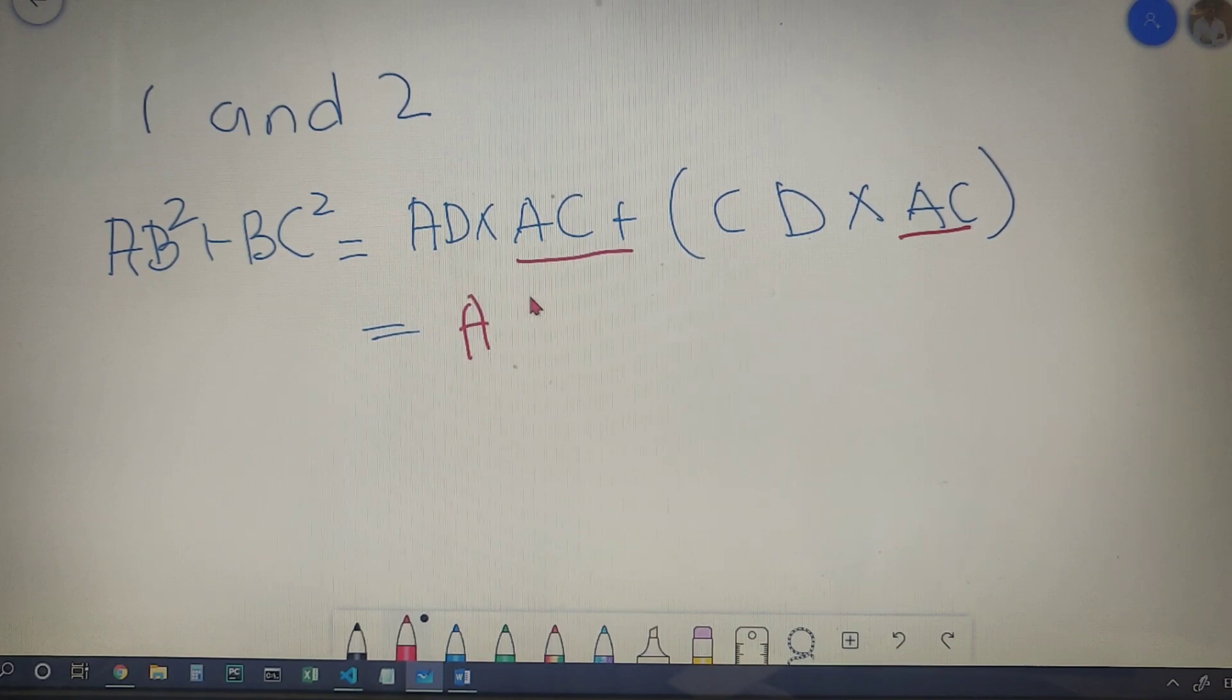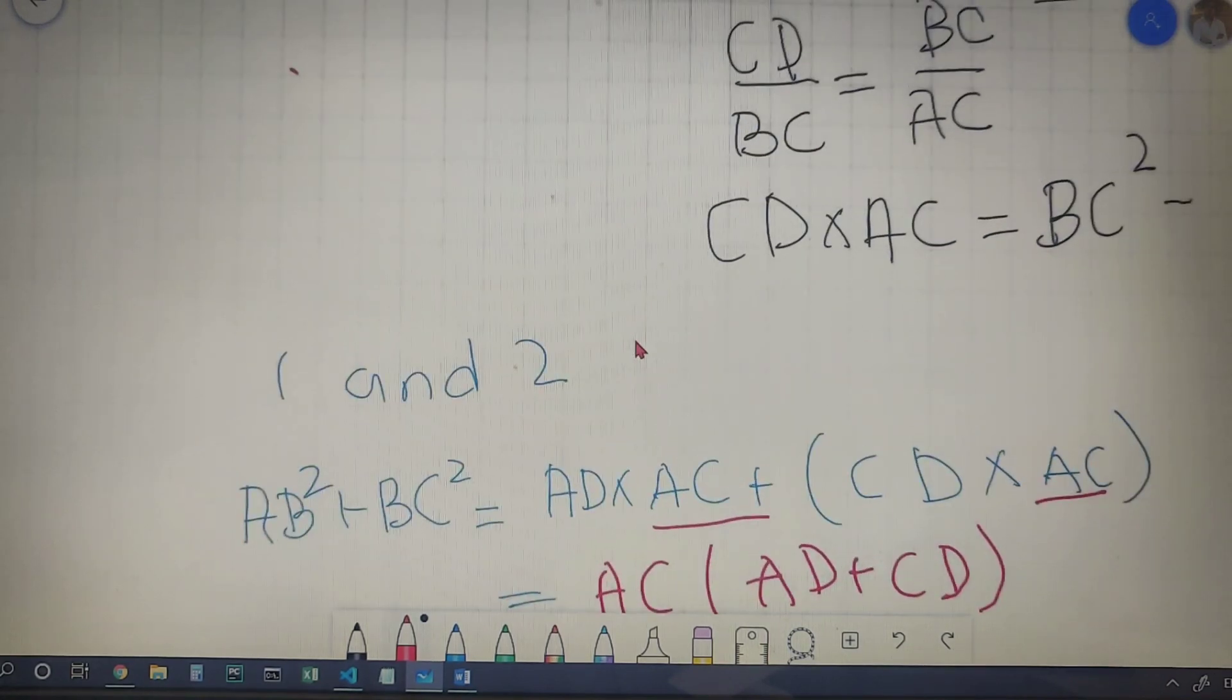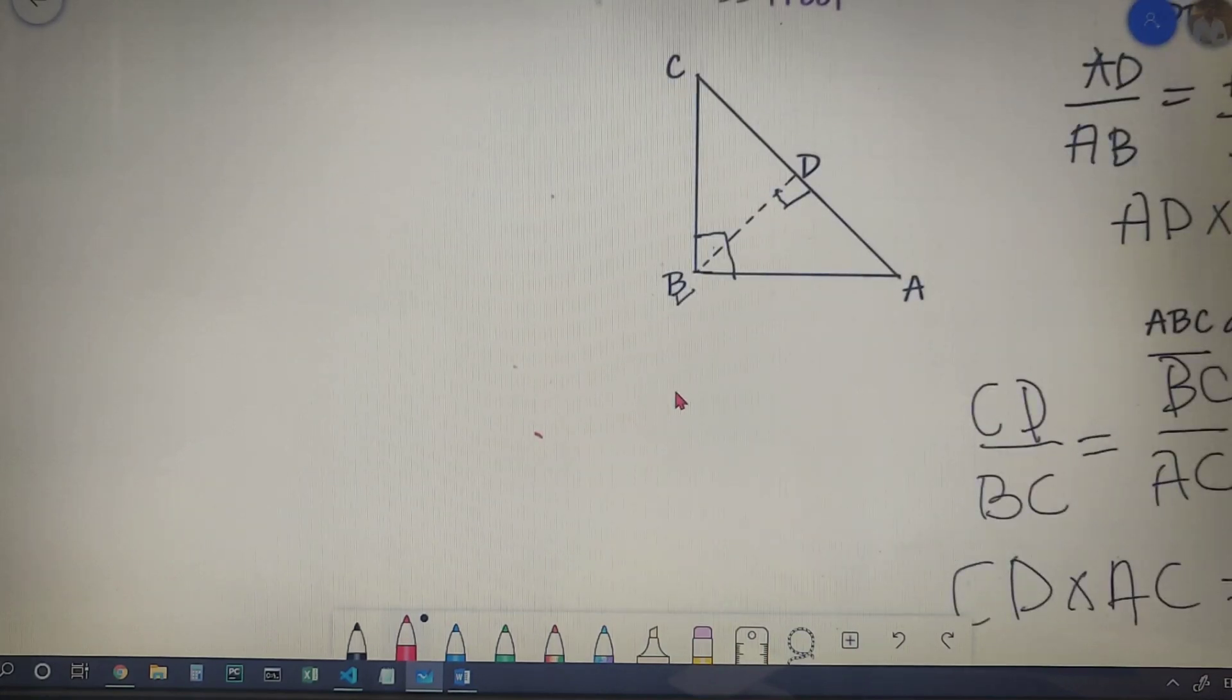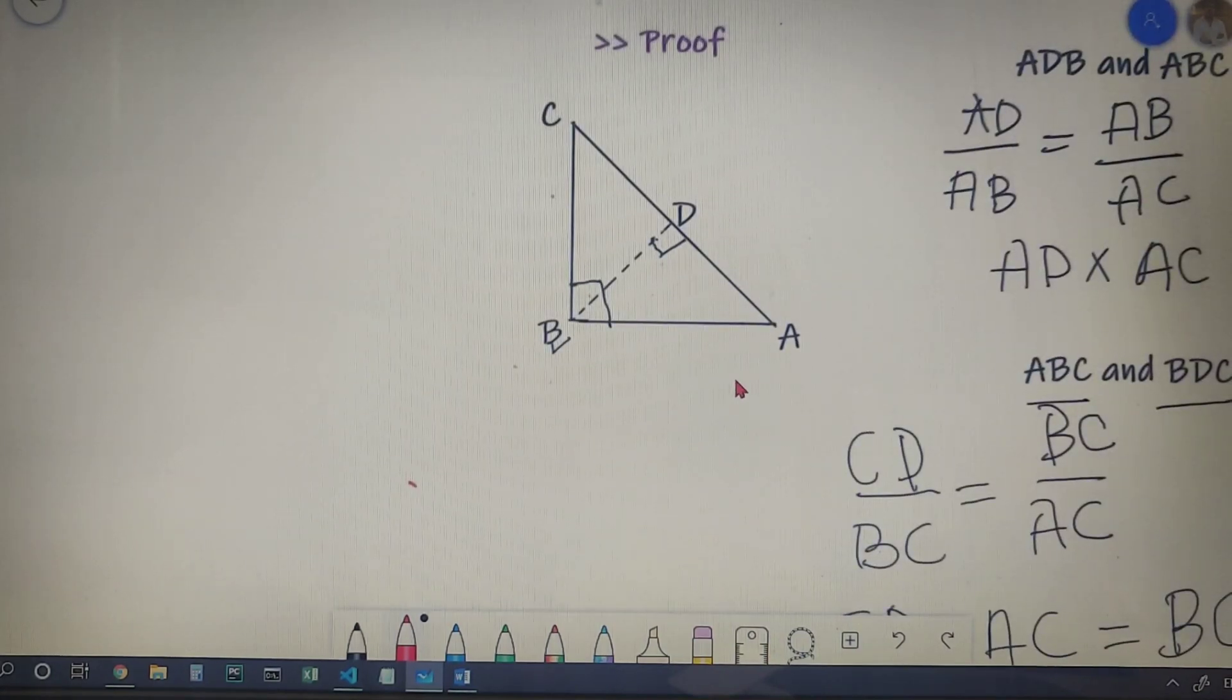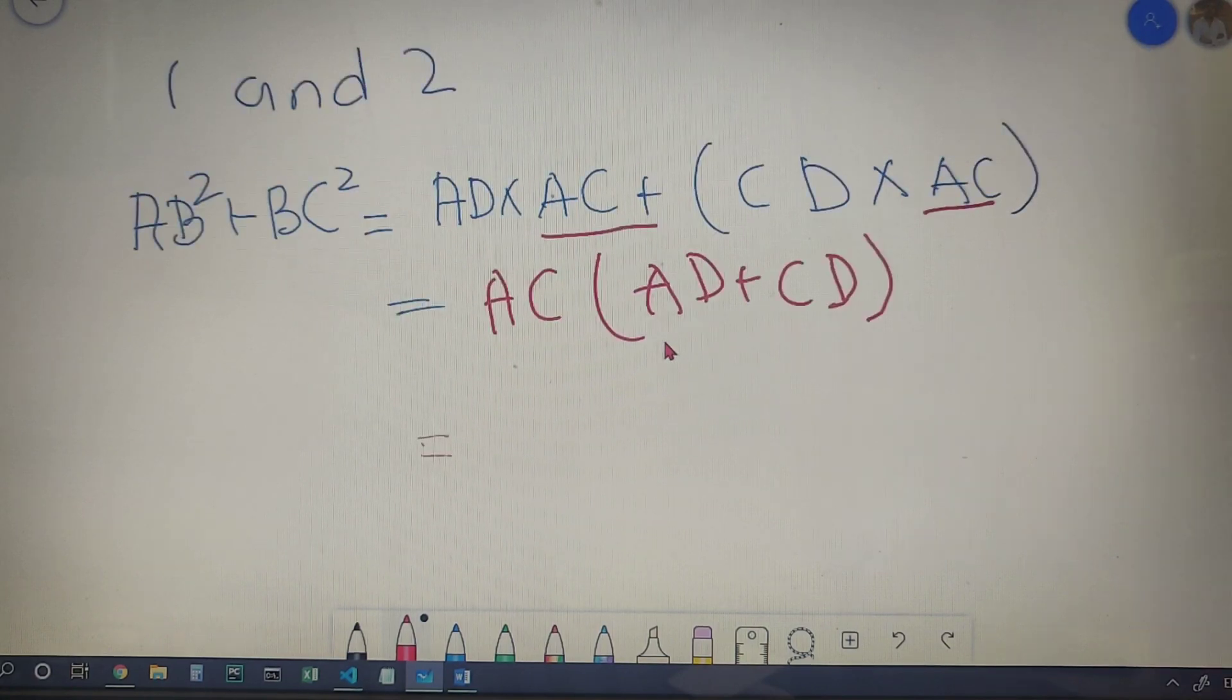So upon taking AC common, we get AC into AD plus CD. Now in the triangle we have that AD plus DC is equal to AC.